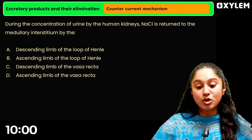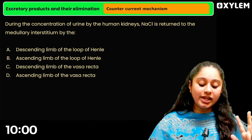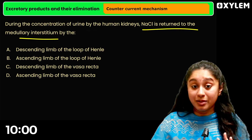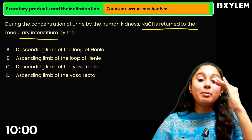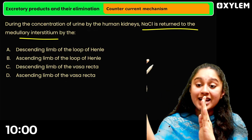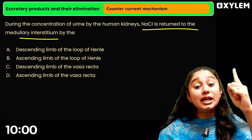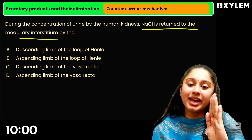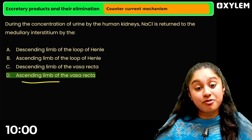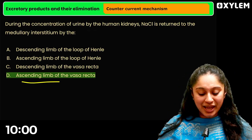In the last class, we covered the counter-current mechanism. Everyone remembered that the medullary interstitium accumulates NaCl. The ascending limb of the loop of Henle released the salt, and the descending and ascending limbs of the vasa recta were involved. That is the correct answer — well done, keep it up.